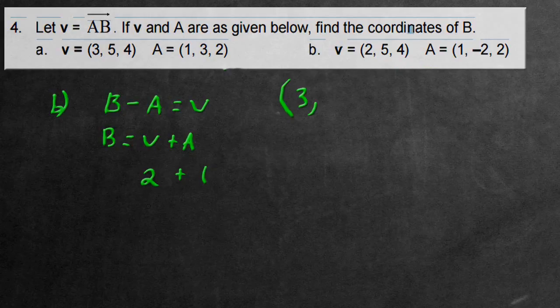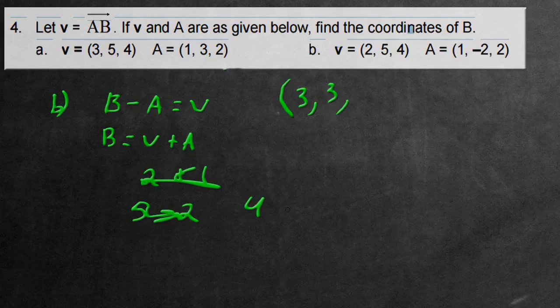The middle coordinate would be 5, add the middle coordinate there which is a negative 2. So let's put a negative 2 there, that'll give us 3 overall. The last one is 4 add 2, which is 6. And this would be the coordinates of vector B for part B of this question.